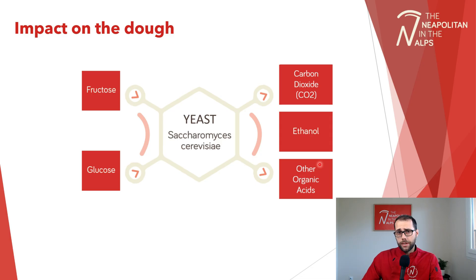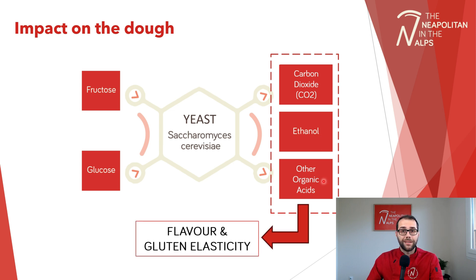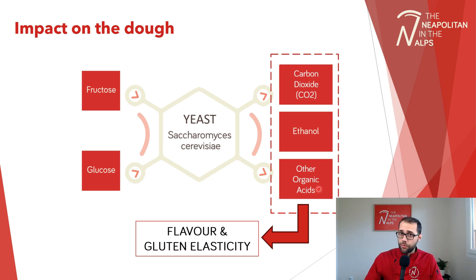When we look at the impacts of fermentation on our dough, we focus on its results. Fermentation gives us carbon dioxide, ethanol, and other organic acids. These three elements impact our dough on two levels: first, flavor; and second, gluten elasticity. This is essential to understand because the elasticity and flavor we achieve in our dough depend essentially on fermentation. Where does this link come from?